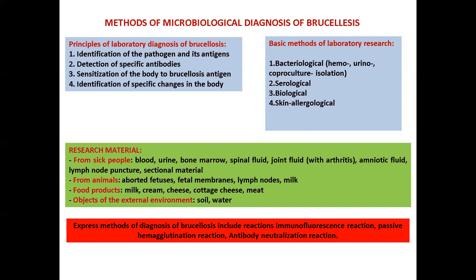Research materials from sick people include blood, urine, bone marrow, spinal fluid, joint fluid, amniotic fluid, lymph node puncture, and sectional material. From animals: aborted fetuses, fetal membranes, lymph nodes, and milk. From food products: milk, cream, cheese, cottage cheese, and meat. From the external environment: soil and water.